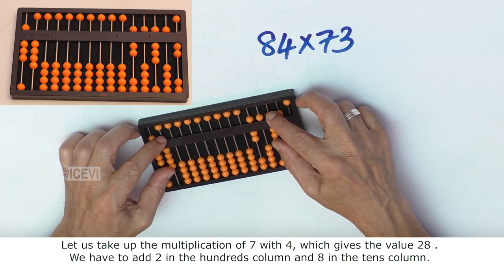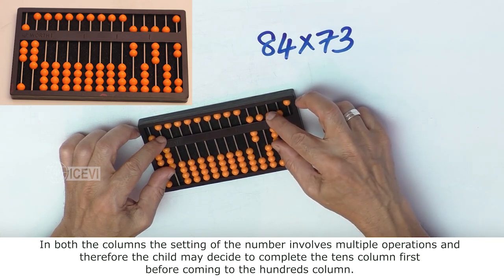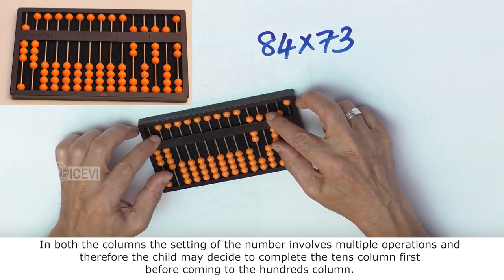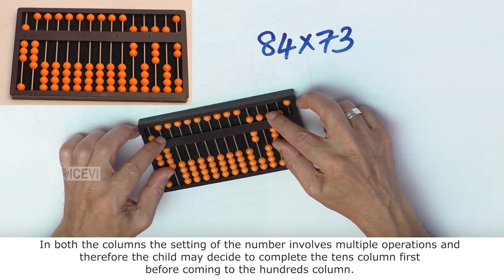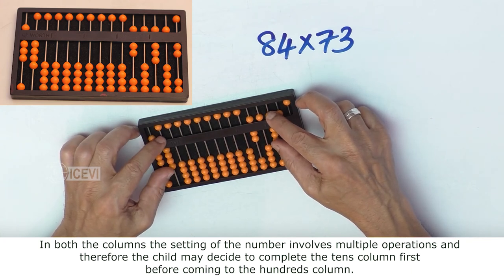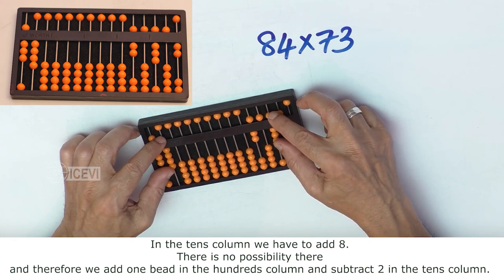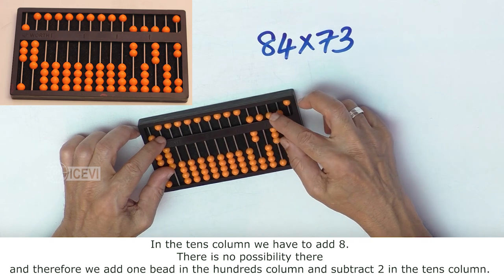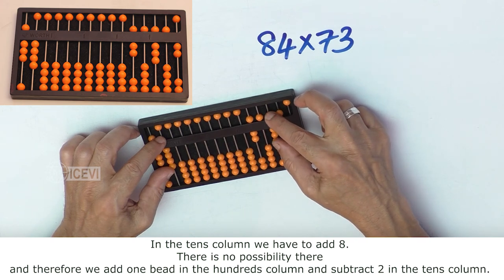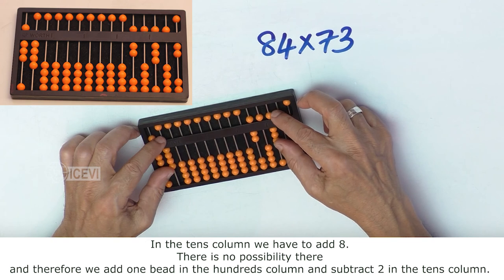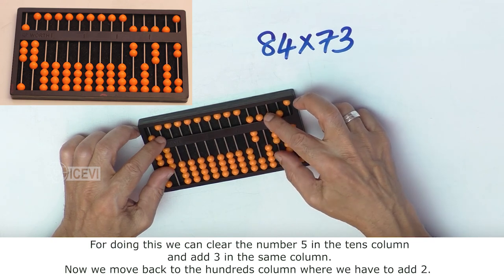We have to add 2 in the 100th column and 8 in the 10th column. In both the columns the setting of the numbers involve multiple operations. Therefore the child may decide to complete the 10th column first before coming to the 100th column. In the 10th column we have to add 8. There is no possibility there and therefore we have to add 1 bead in the 100th column and subtract 2 in the 10th column.